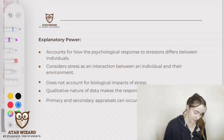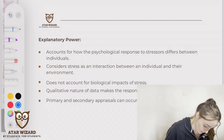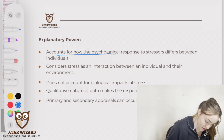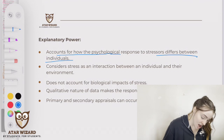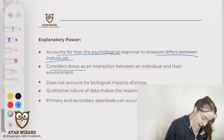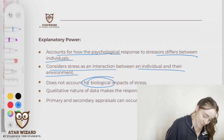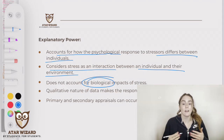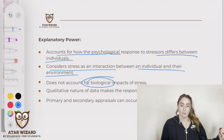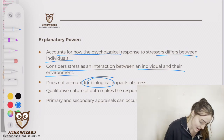The explanatory power of this model is that it accounts for how the psychological response to stress differs between individuals — which is a positive. It considers stress as an interaction between an individual and their environment. However, it doesn't account for the biological impacts of stress, whereas the GAS model looks at how stress can wear you down and make you sick by the time you reach the exhaustion stage — and this model doesn't have an equivalent to that.